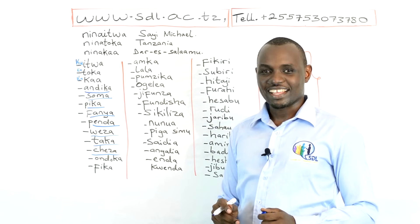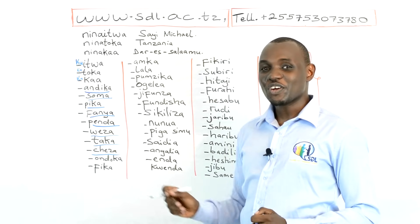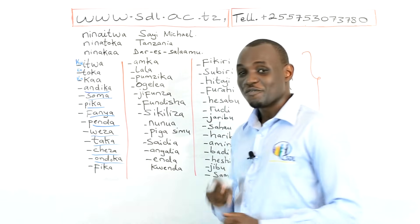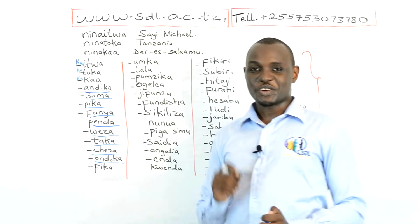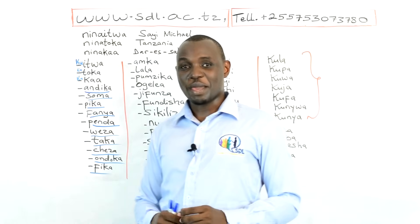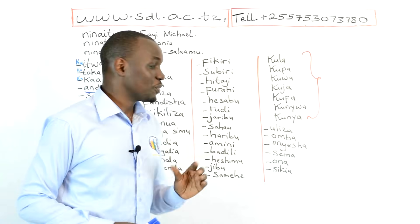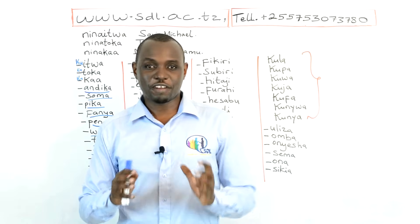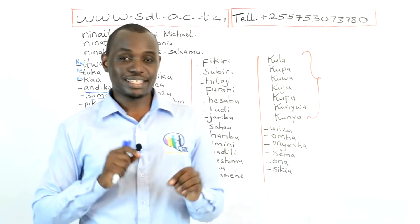Ondoka means leave; Ku Ondoka means to leave. Fika means arrive; Ku Fika means to arrive. Maybe I'm going fast, but make sure you put these new verbs into flashcards — that will help you to memorize.